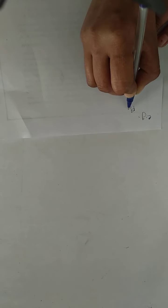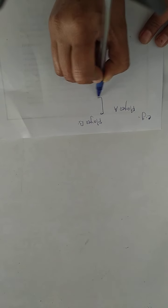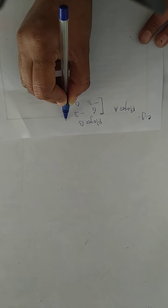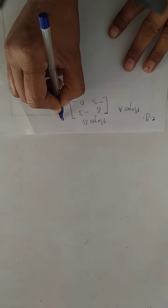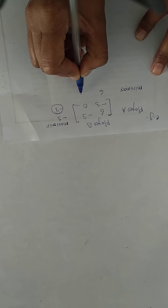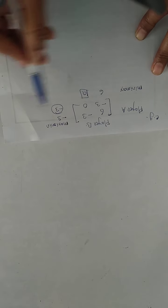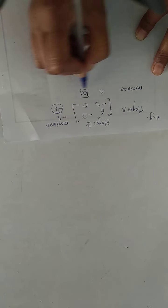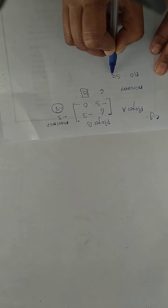Now we see the next example — Example 2. The given payoff matrix is player A and player B, with entries 6, minus 3, minus 3, 0. The given payoff matrix has no saddle point. First, find the maximin and minimax.